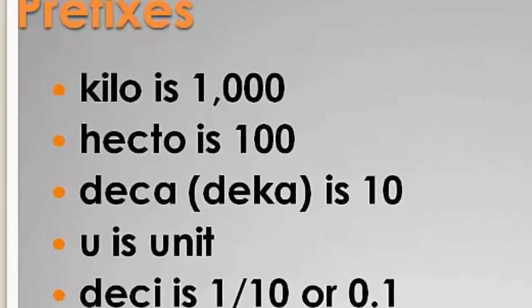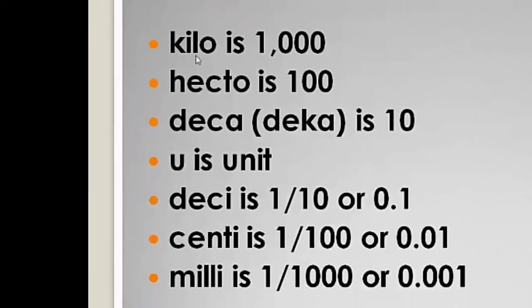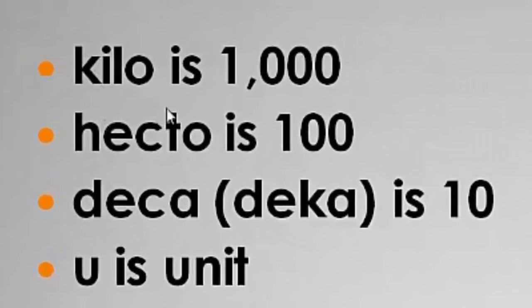So what do the prefixes mean? K, remember we said king. K is for kilo, and kilo is the same thing as saying a thousand. If I said I had a kilo of pizzas, I would have a thousand pizzas. If I said I had a kilo of students, I would have a thousand students. Kilo dollars, a thousand dollars. Kilo means a thousand and it's used quite a bit.